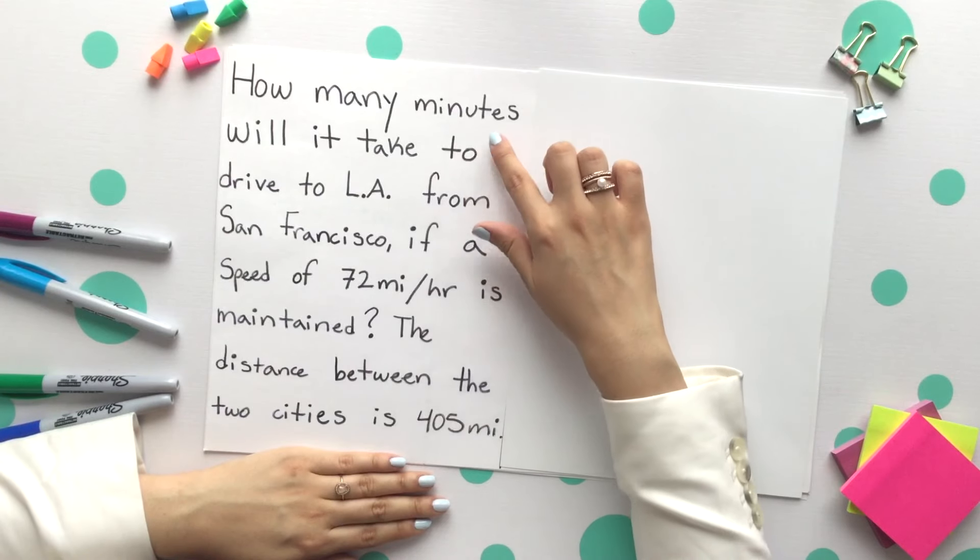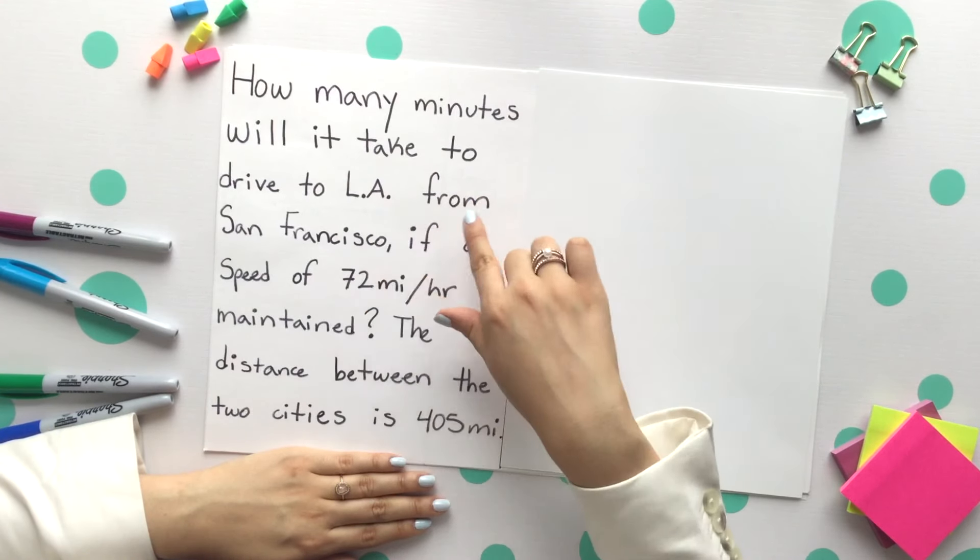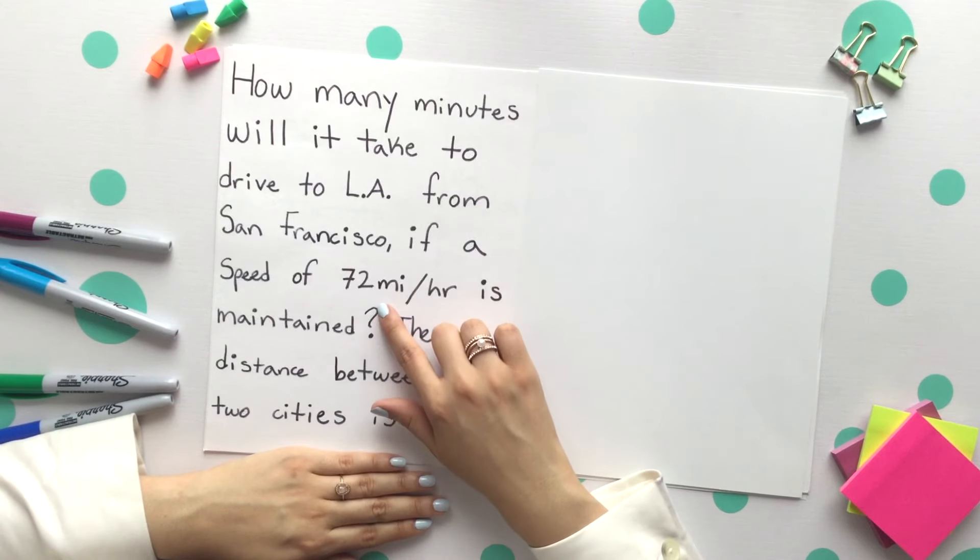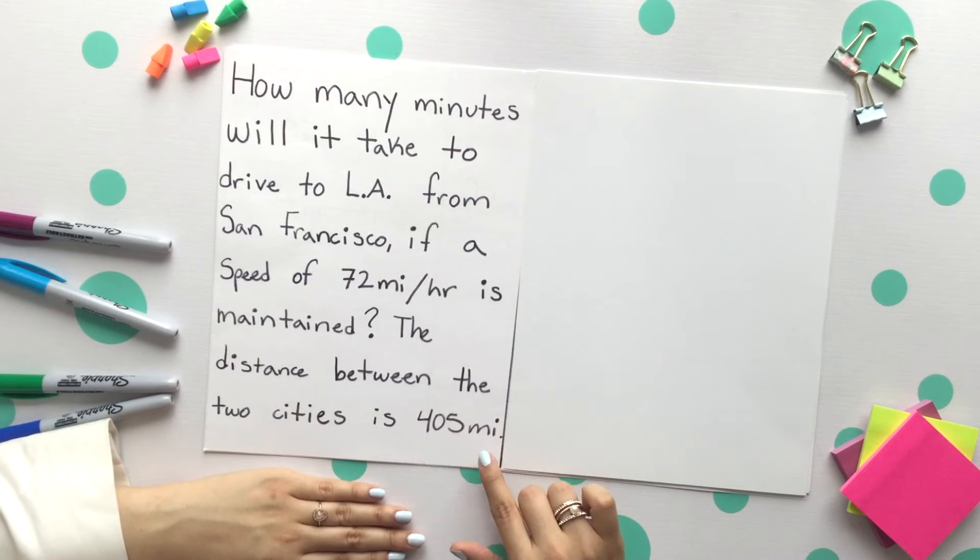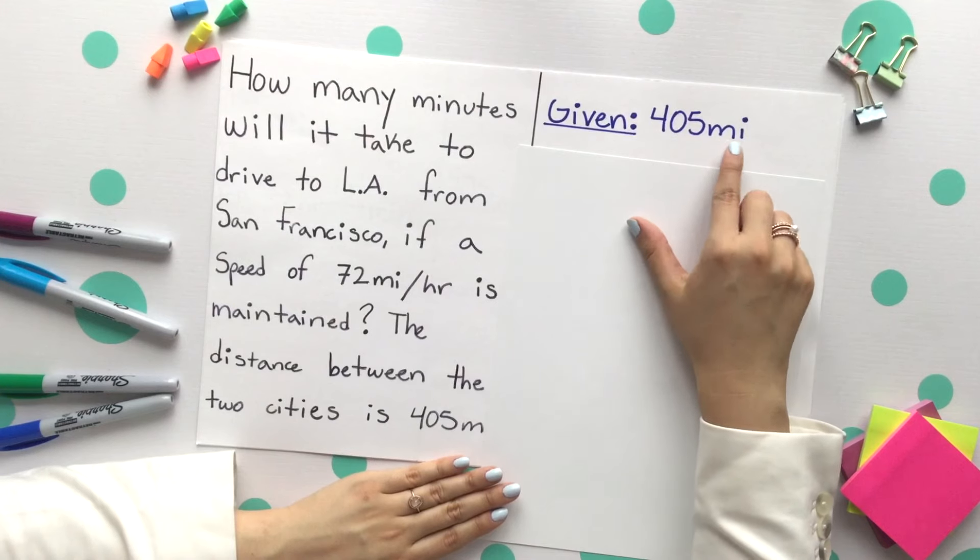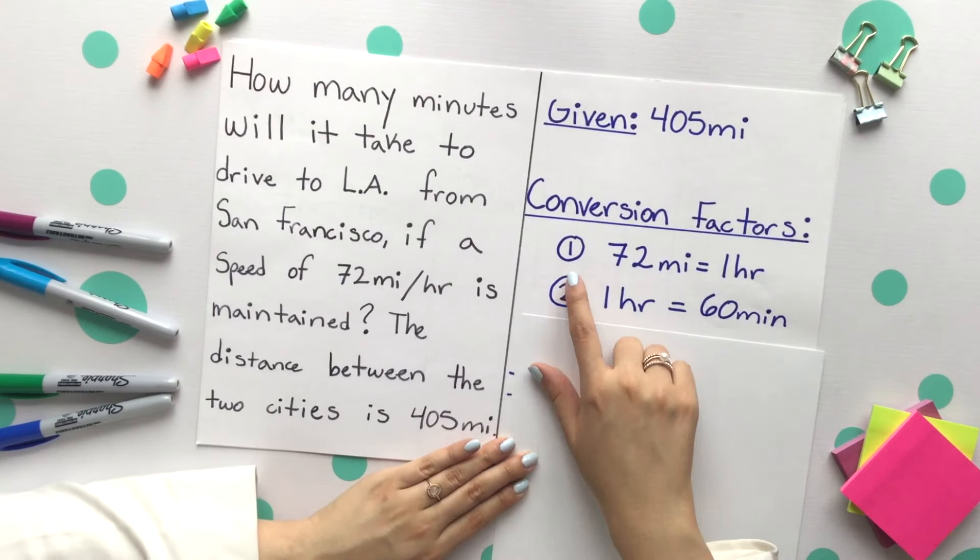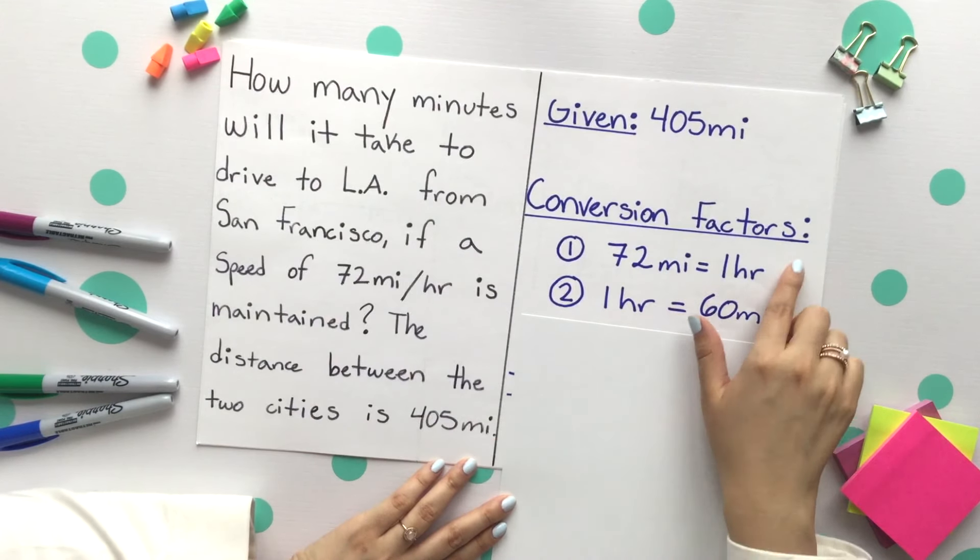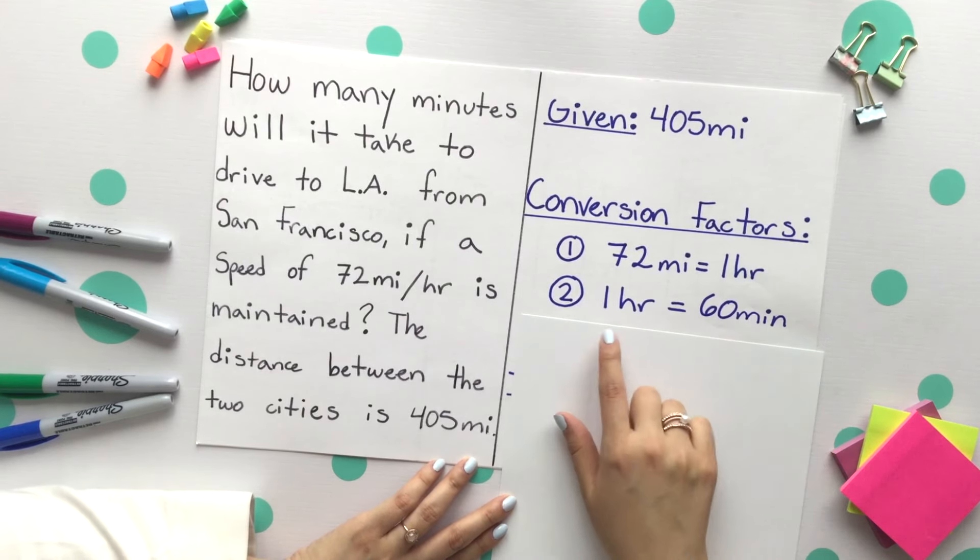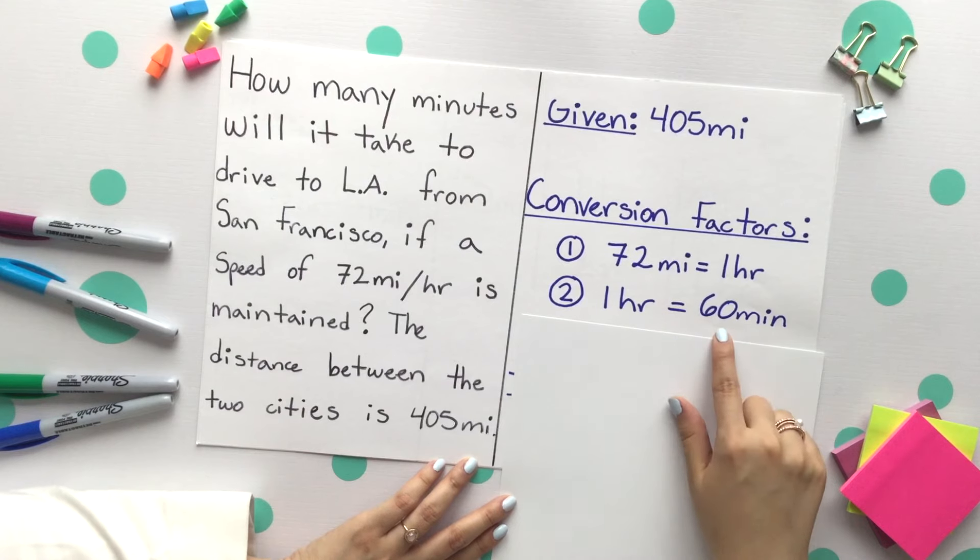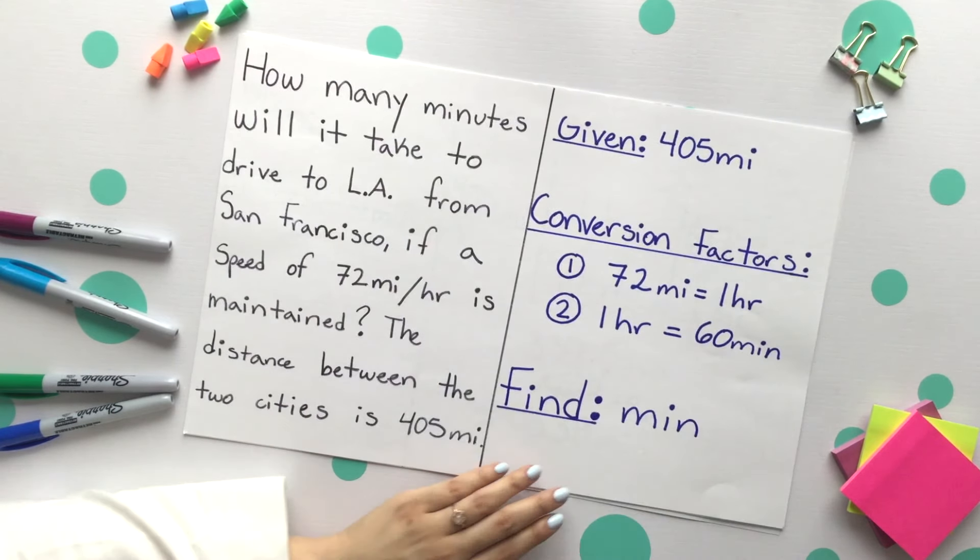Moving on to example two using two conversion factors. How many minutes will it take to drive to LA from San Francisco if a speed of 72 miles per hour is maintained? The distance between the two cities is 405 miles. First start with identifying your given, conversion factor or factors, and what you are finding. Your given is the 405 miles. Our conversion factors will start with the 72 miles per hour—per hour just meaning that it's for every one hour. From there we need to convert to minutes, so we'll need the conversion factor of one hour equaling 60 minutes because we are then finding minutes.